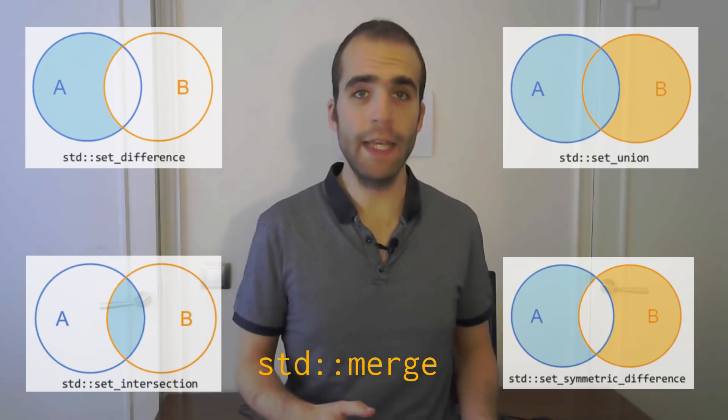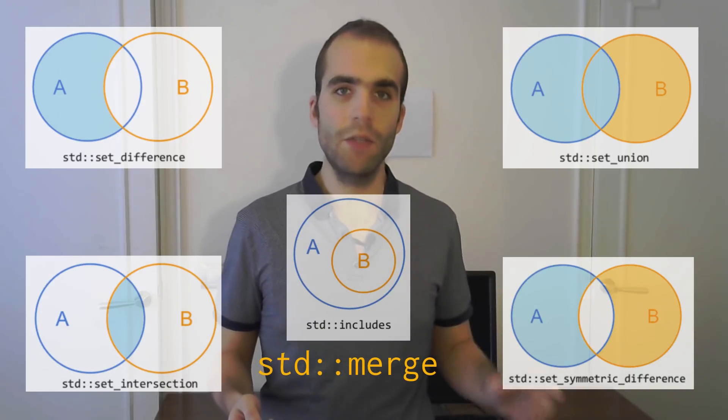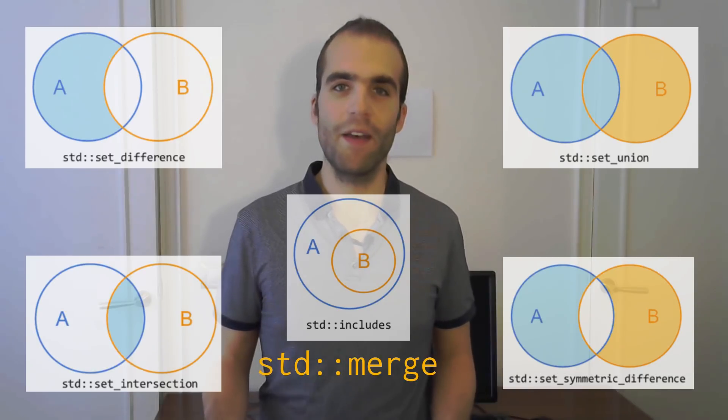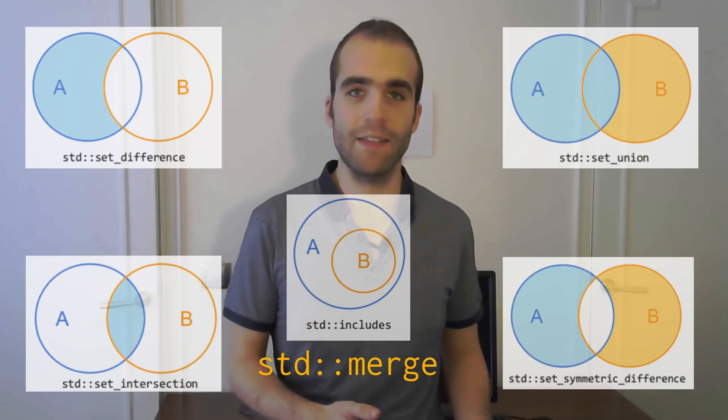And finally, we've got includes, that takes two sets and returns a boolean that indicates whether the first set contains the second one.